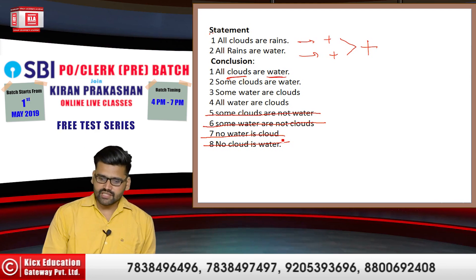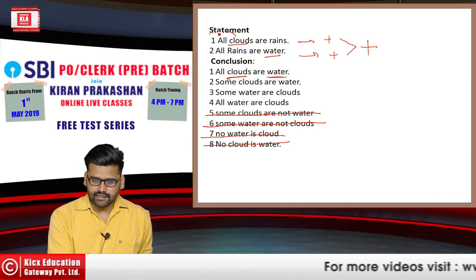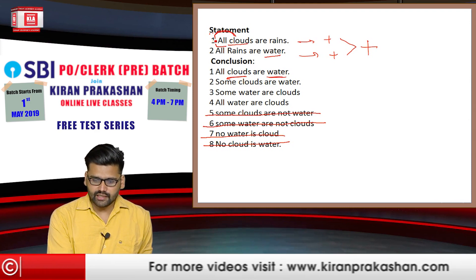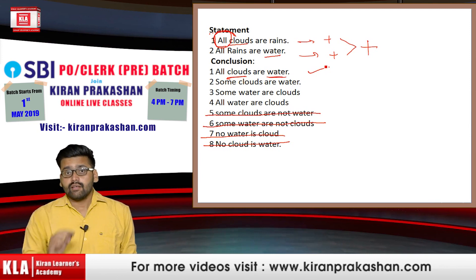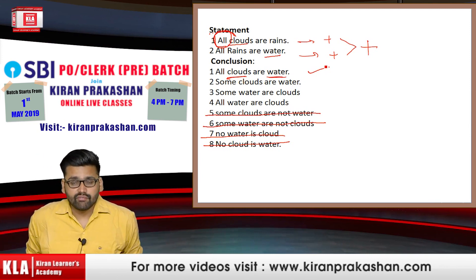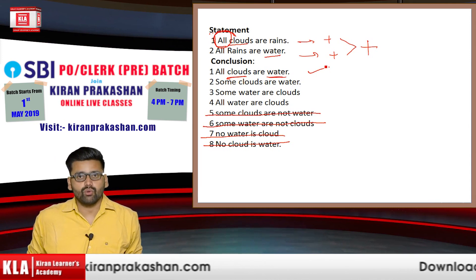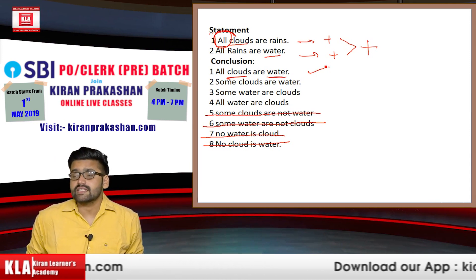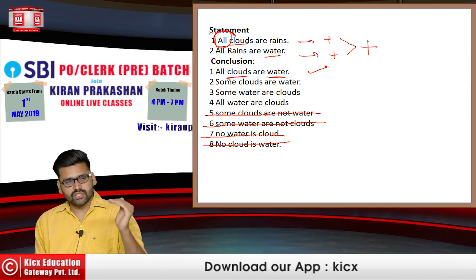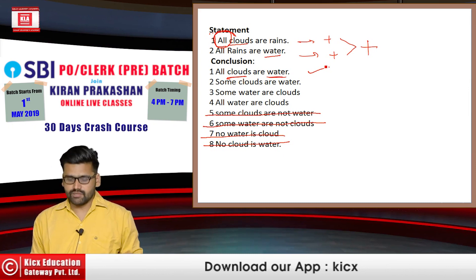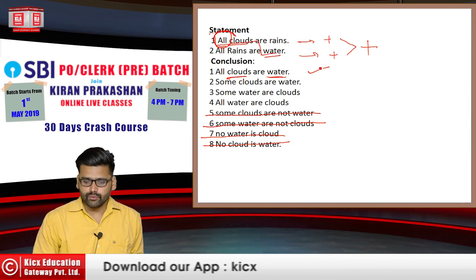Let's check conclusion 1: All clouds are water. Cloud is here and water is here. Look at what is written before cloud — it says 'all'. This means the conclusion will follow. But this doesn't mean all positive conclusions follow; among the positive ones, we check which ones specifically follow. All clouds are water — this is a valid point.